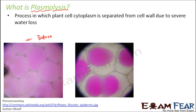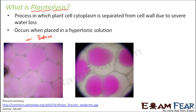So after plasmolysis, the vacuoles shrink and the cytoplasm gets separated from the cell wall. In order to understand when plasmolysis occurs and when a plant cell starts to lose water, we need to understand the behavior of cells in different types of solutions. This situation comes when the cell is placed in a hypertonic solution, so let us discuss the different types of solutions.